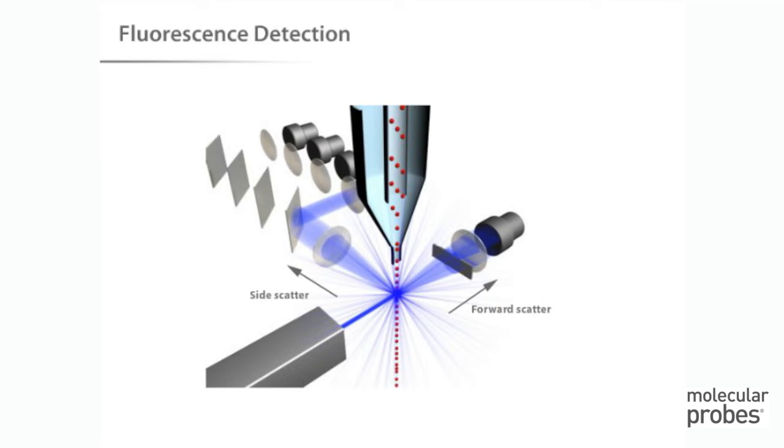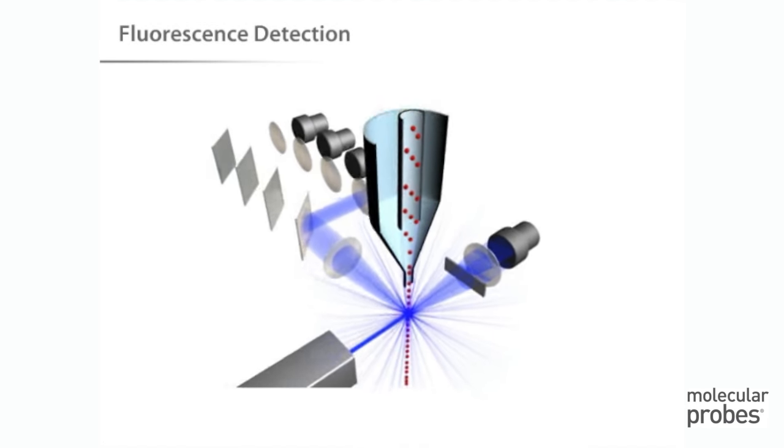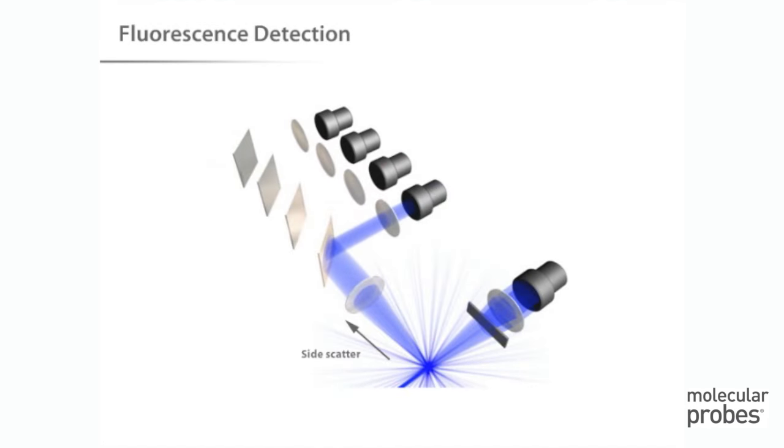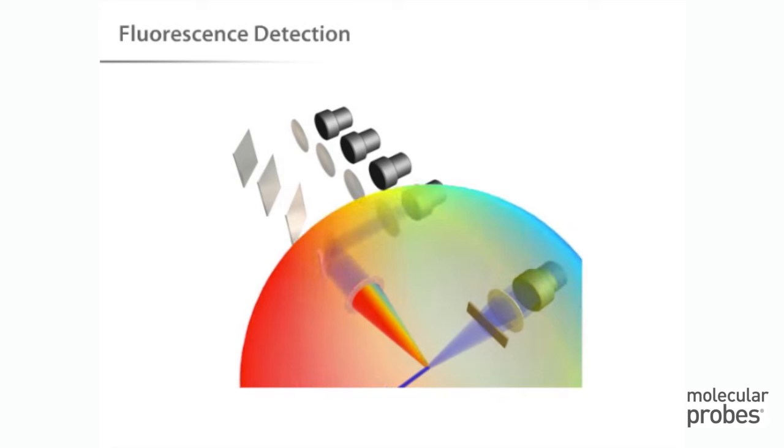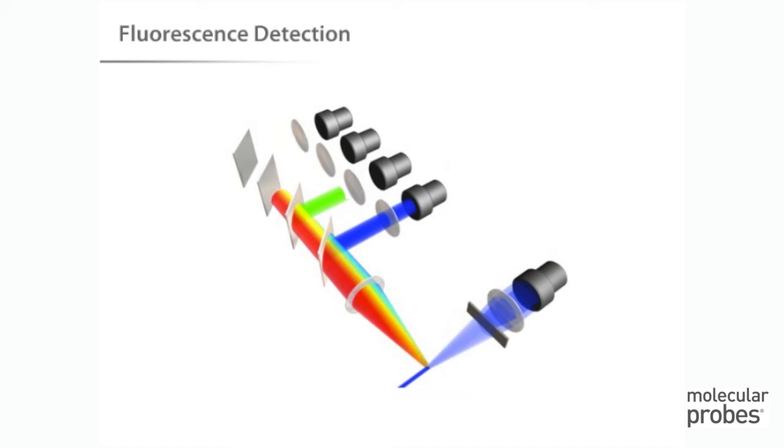How is this fluorescence information collected? The fluorescent light, coming from labeled cells as they pass through the laser, travels along the same path as the side-scatter signal. As the light travels along this path, it is directed through a series of filters and mirrors so that particular wavelength ranges are delivered to the appropriate detectors.